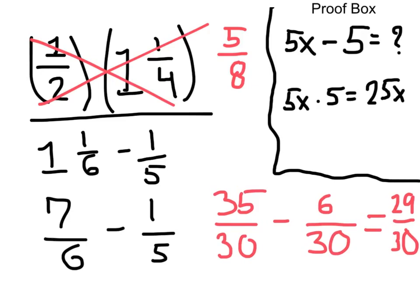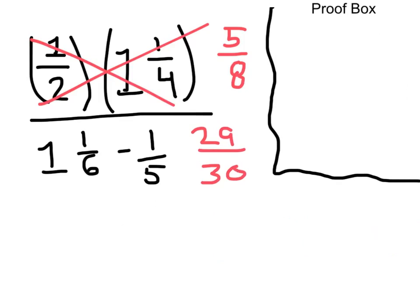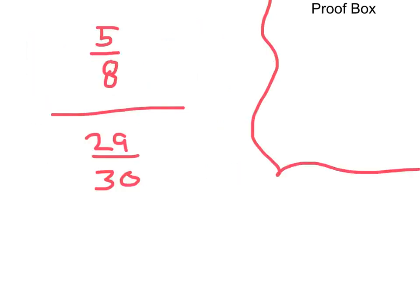Now, we can go ahead and put in 29/30 for the bottom part of our problem. Now you can see that we have just simplified this big messy expression down to 5/8 over 29/30.